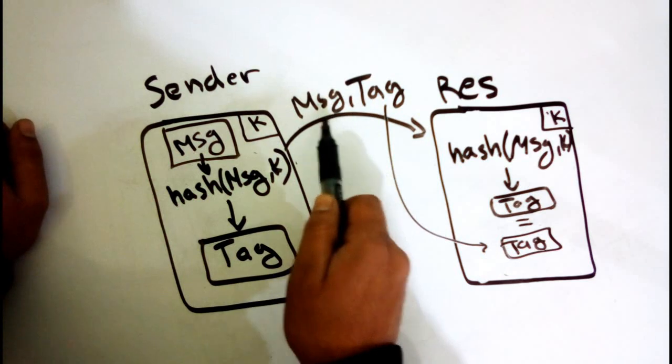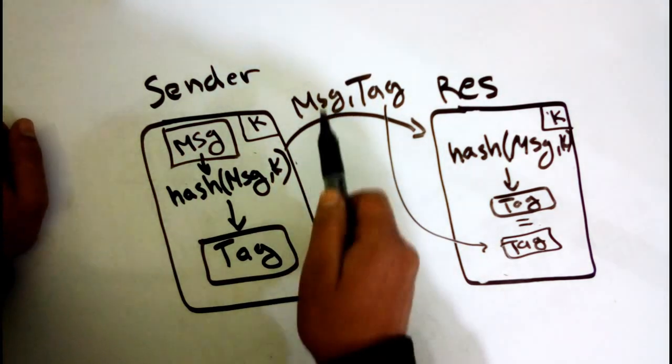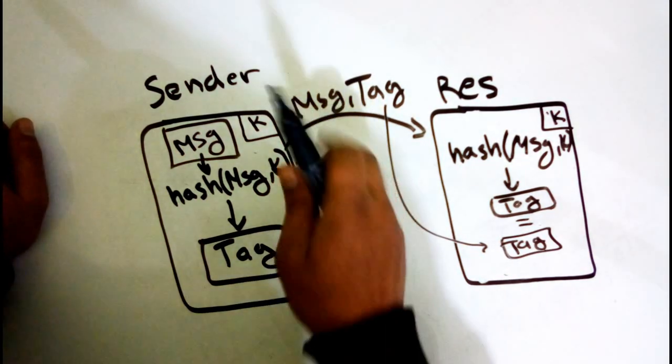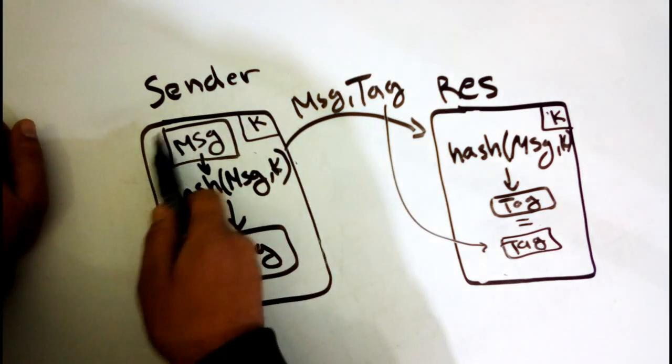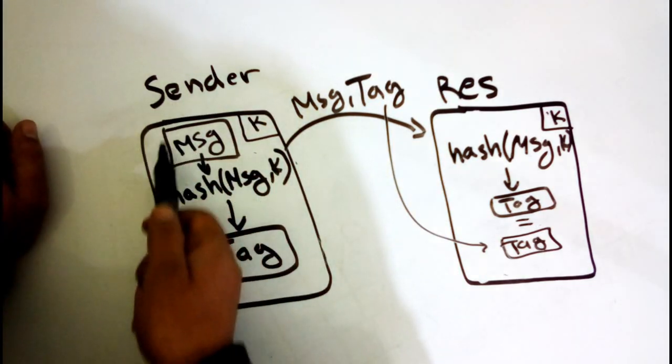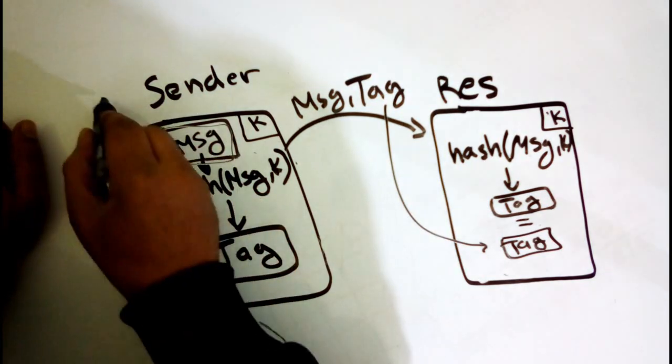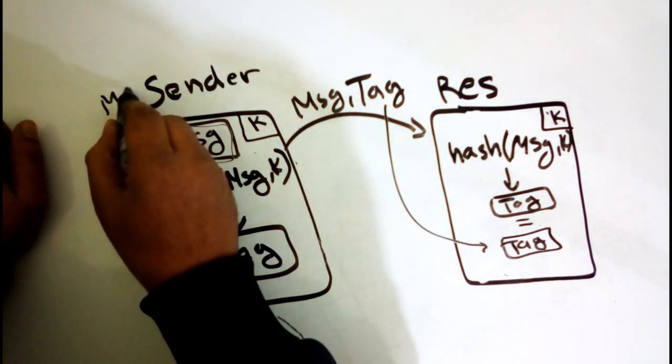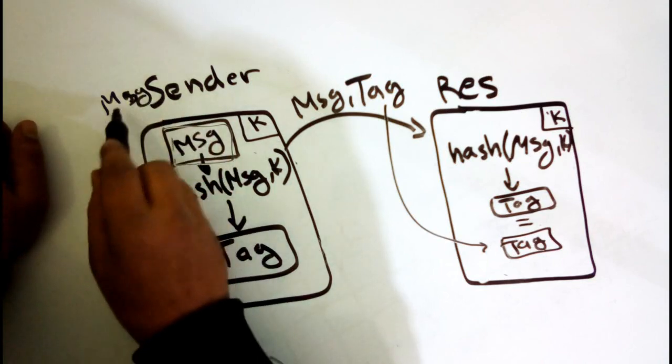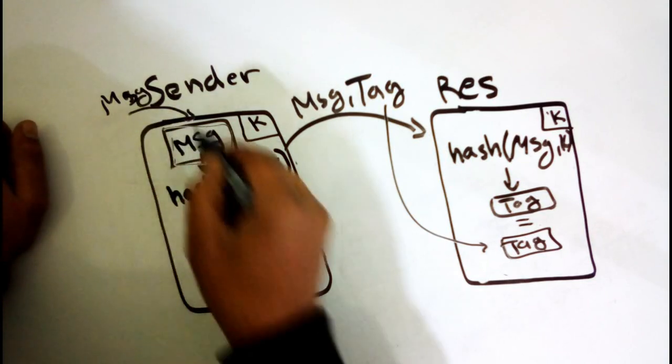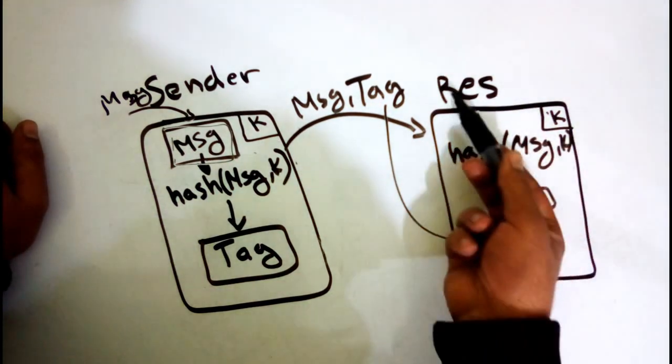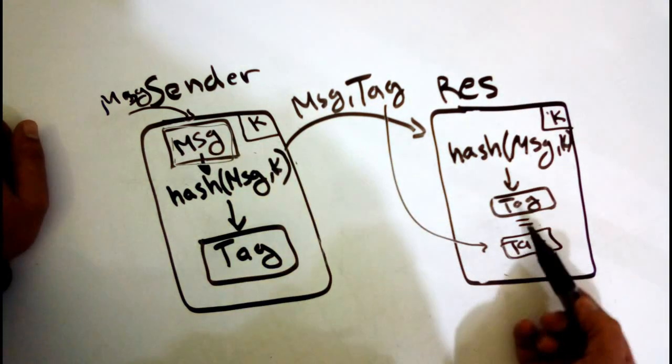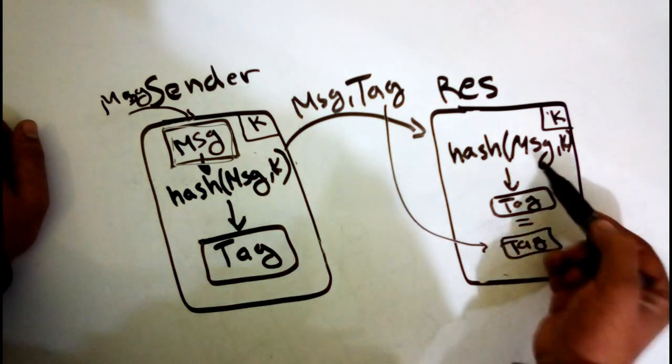If you want to hide your message, you can encrypt it before you use it here. So you have a message, encrypt it and put it here, and continue the same algorithm. Then when the receiver checks that no one forged the message, just decrypt it.